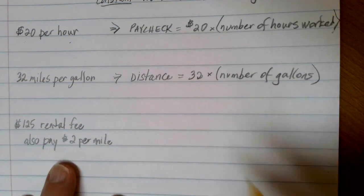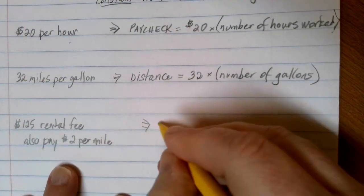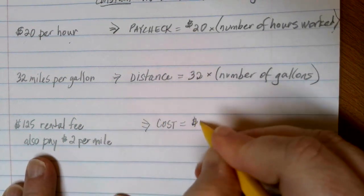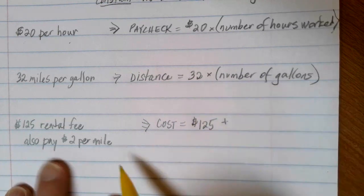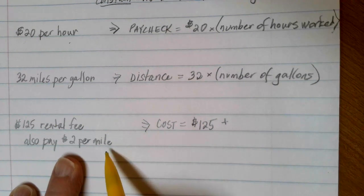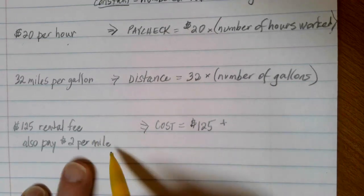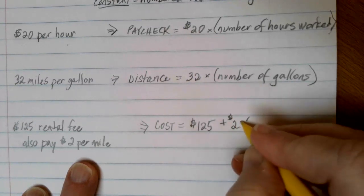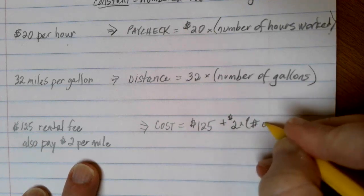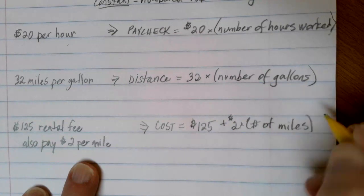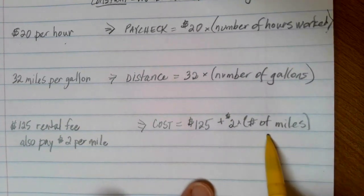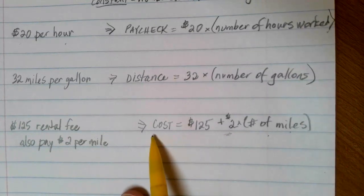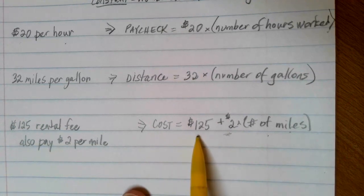This one's a little bit more complicated, but if we want to figure out what our total cost is going to be in this situation, what we're going to have to do is take that $125 rental fee and then add this information here based on our rate of change. So in this example, I have to pay $2 per mile, so I'm going to have to multiply my $2 by the number of miles that I used in my truck. In this case, I had my rate of change here, I multiplied it by what was changing and added this $125 flat fee to my cost.